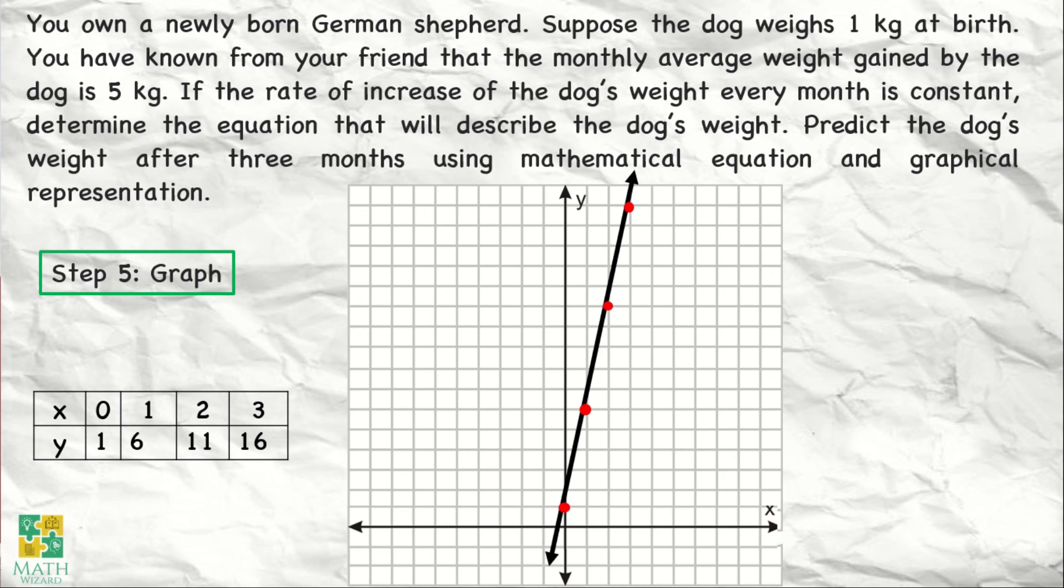For step number 5, we are going to graph our table values. When x is 0, y is 1. When x is 1, y is 6. When x is 2, y is 11. And when x is 3, y is 16. Kaya, ito po yung magiging graph natin. A straight line.